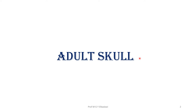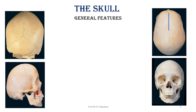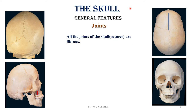Let's go to the adult skull and have a summary of what we will know about it. Starting with the general features of the skull — those are the joints. The joints are named sutures, and all of them are fibrous joints. There are two ways to name those sutures, exactly like the rest of the body.